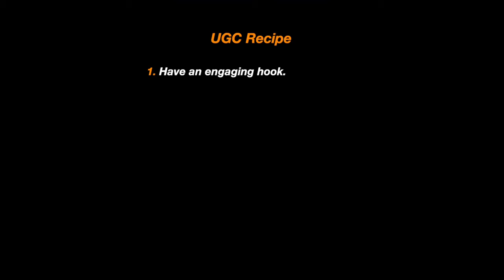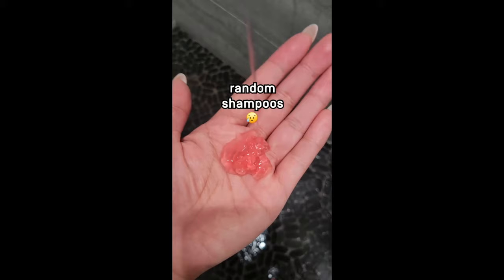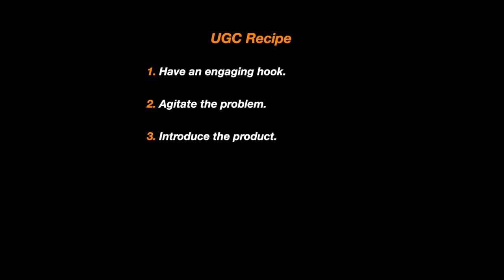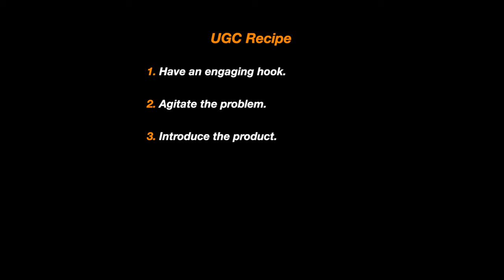Next, you're going to agitate the problem — give some personal history about how this problem has affected you. Oftentimes in the hook, I like to focus on the problem. After I agitate the problem, that's when I introduce the product, and then I go through a series of benefits, give some testimonial, and then I end with a catchy CTA. This is literally the format that I use to script all of my UGC content.